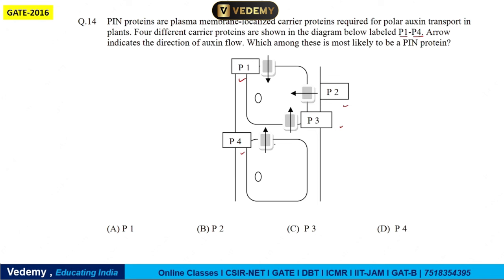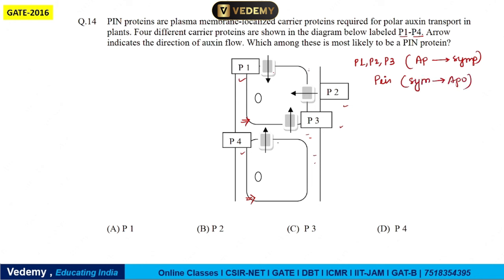Generally, PIN protein always stays in the basal area. The work of PIN protein is to carry auxin from symplast to apoplast. Now among P1, P2, and P3, all are transporting from apoplast to symplast. But we know that PIN protein takes auxin from symplast to apoplast. Only P4 is going from symplast to apoplast.